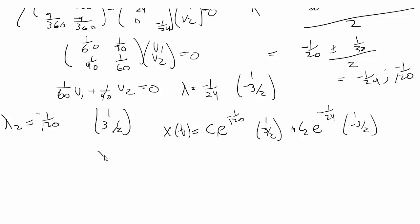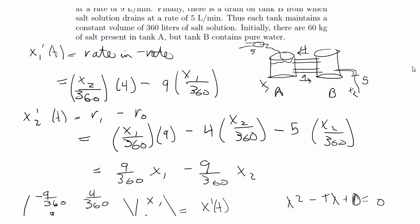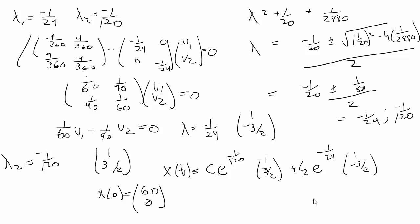And we have that at x of 0, I think it was 60 and 0. So let me just check, that was the last line. Yep, 60, tank A, and 0 and tank B. So this is our IVP problem.